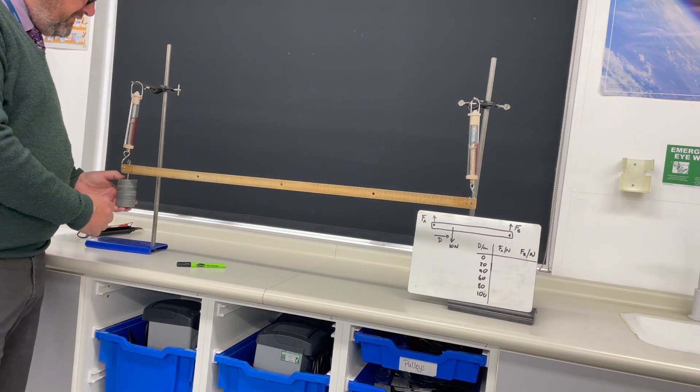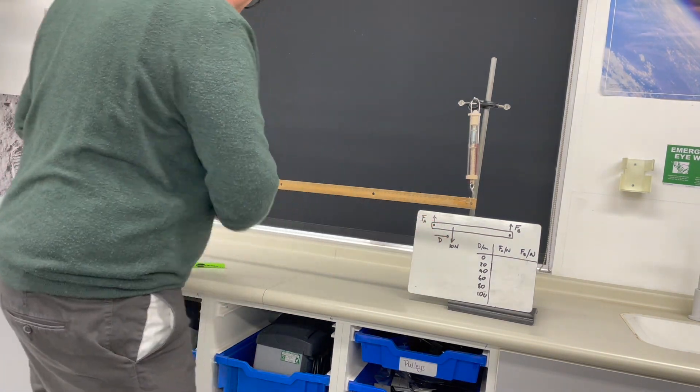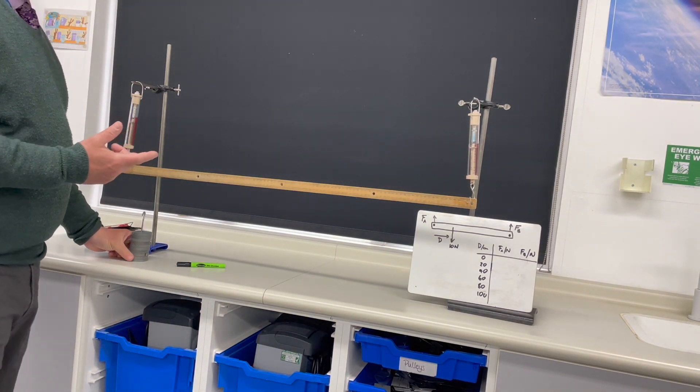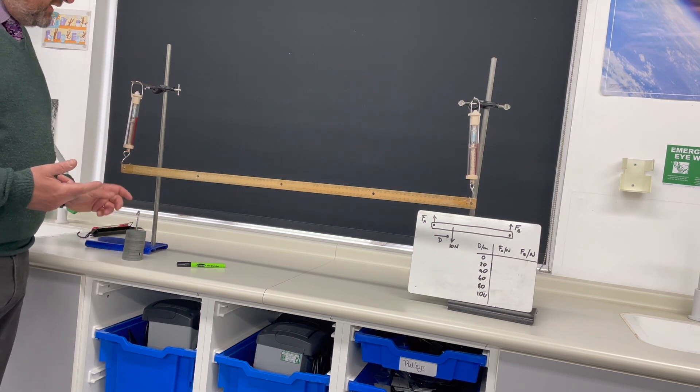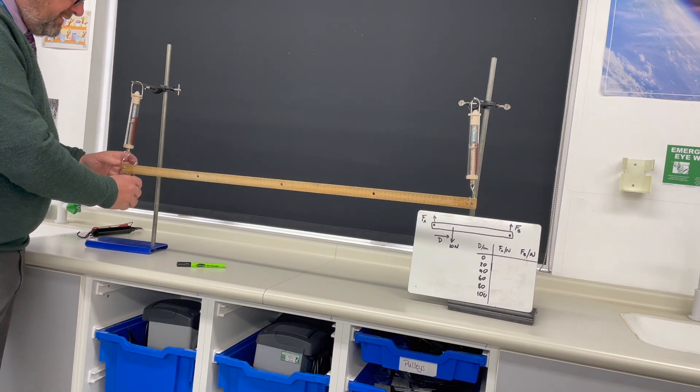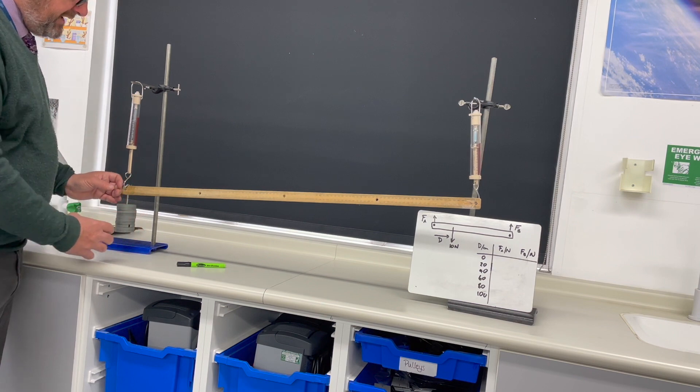I'm going to move it from this end to this end, so the distance away from FA is going to be measured and that's the distance D. That's going to be 0, 20, 40, 60, 80, 100. So what I'm going to do is hang the ruler on here and measure the force.